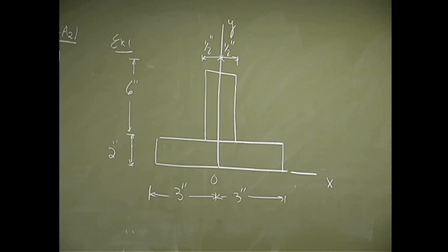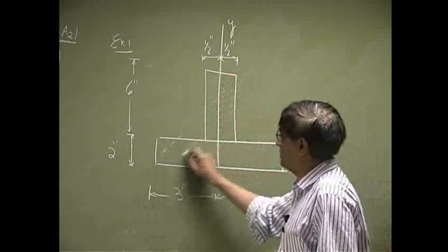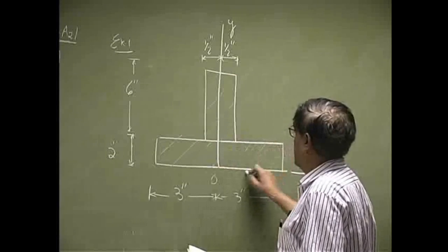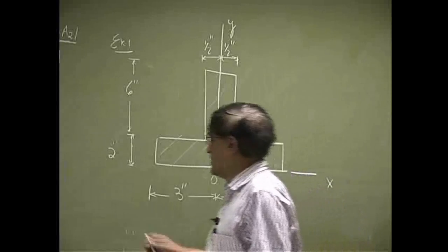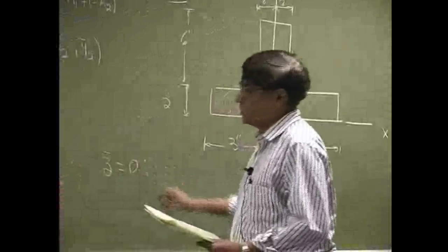So the way this is drawn, again, we are looking at this cross section. We can safely say that the z-coordinate will be 0.